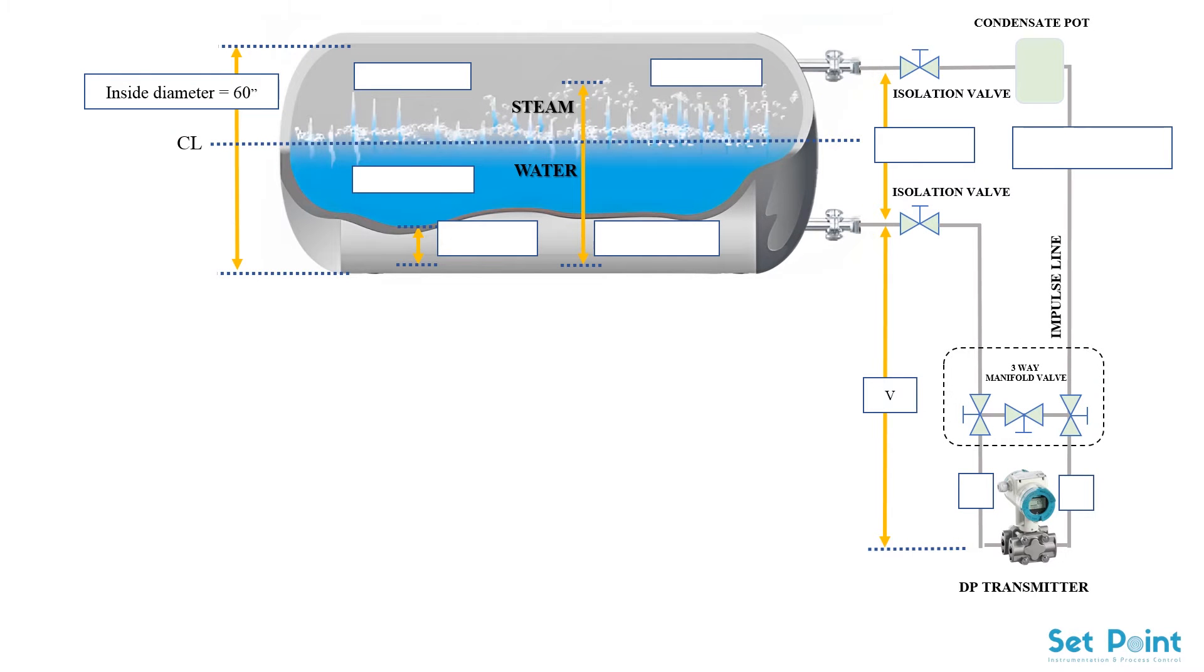Hello everybody, in this tutorial today I would like to speak about a very important topic. Every instrumentation engineer must be aware about how to calculate lower range value and upper range value of the boiler drum level DP transmitter. So let's have a practical example about this topic.